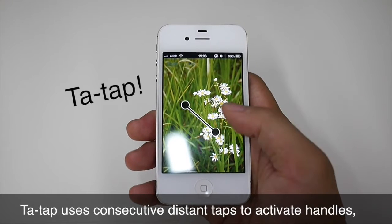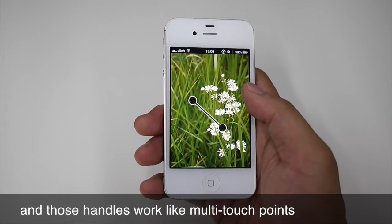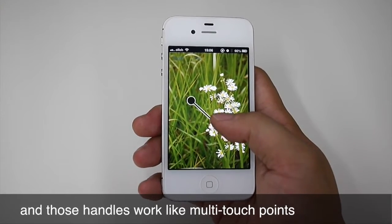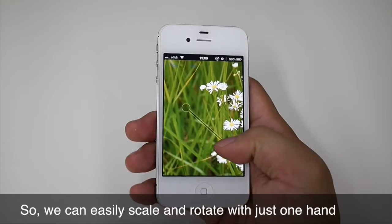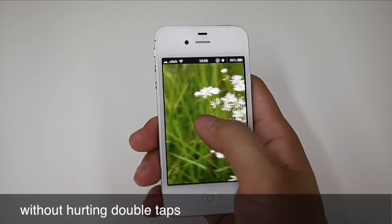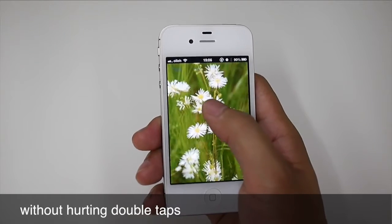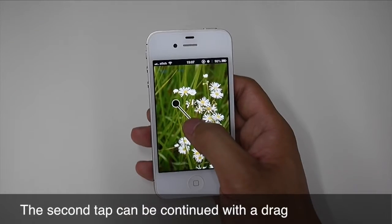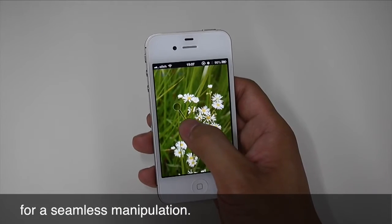Ta-Tap uses consecutive distance taps to activate handles, and those handles work like multi-touch points. So we can easily scale and rotate with just one hand without holding double taps. The second tap can be continued with a drag for a seamless manipulation.